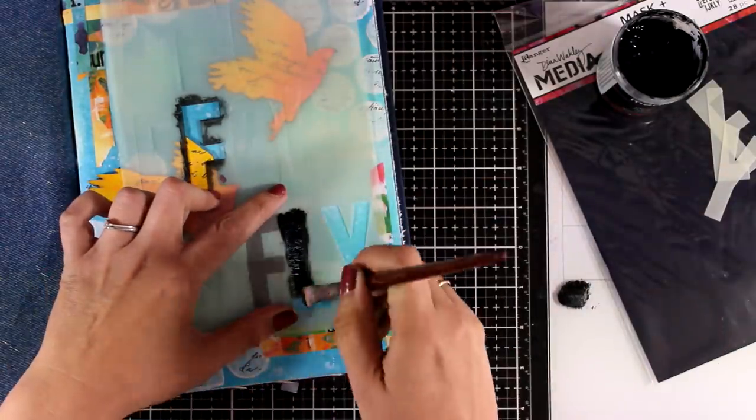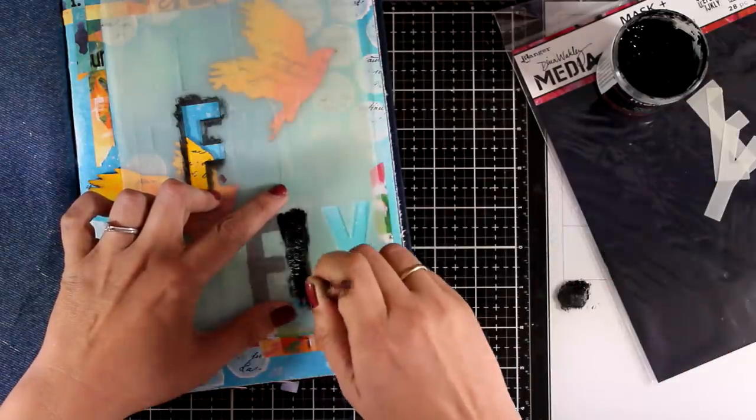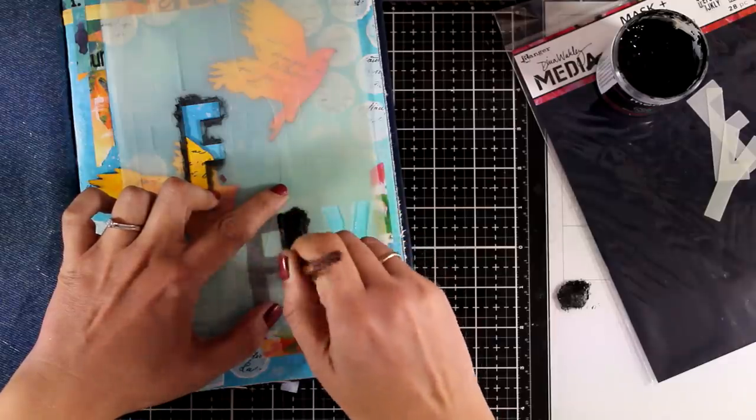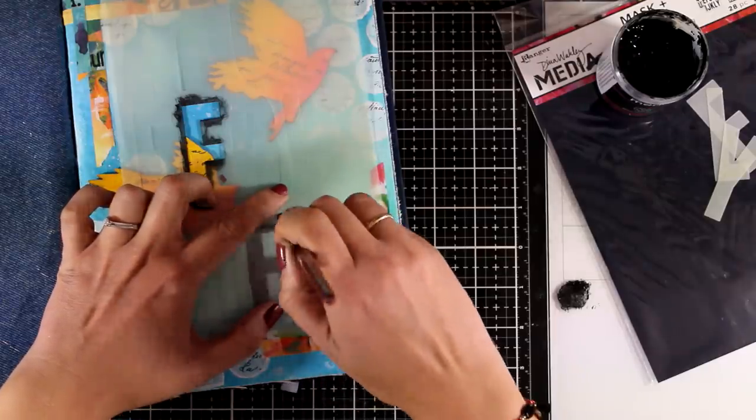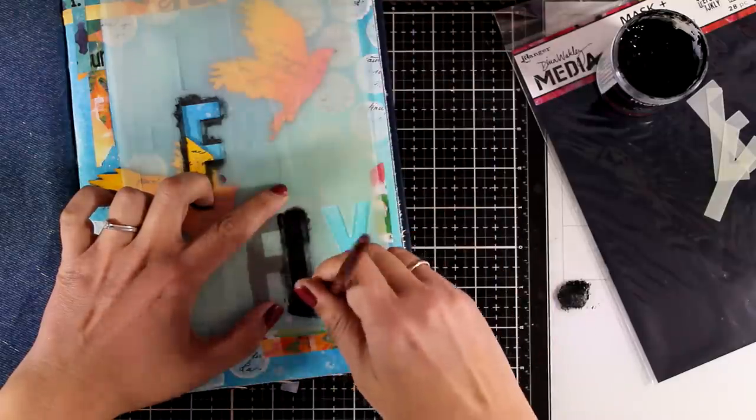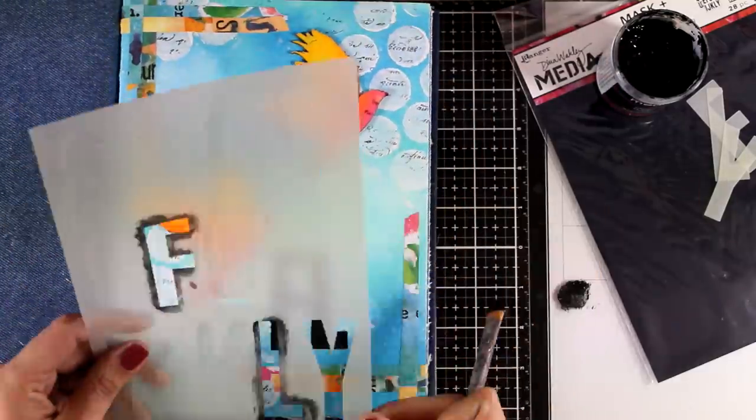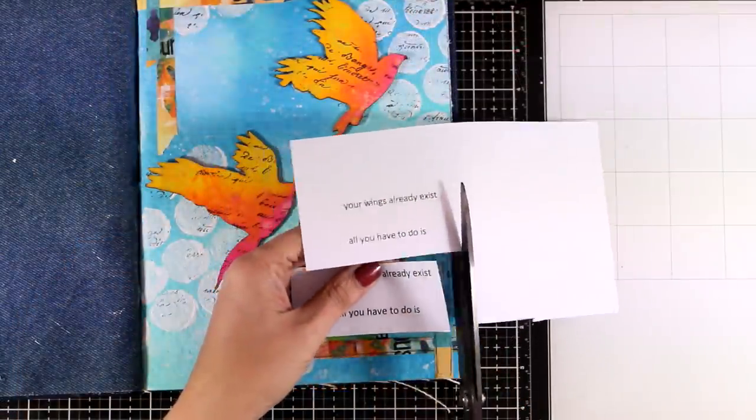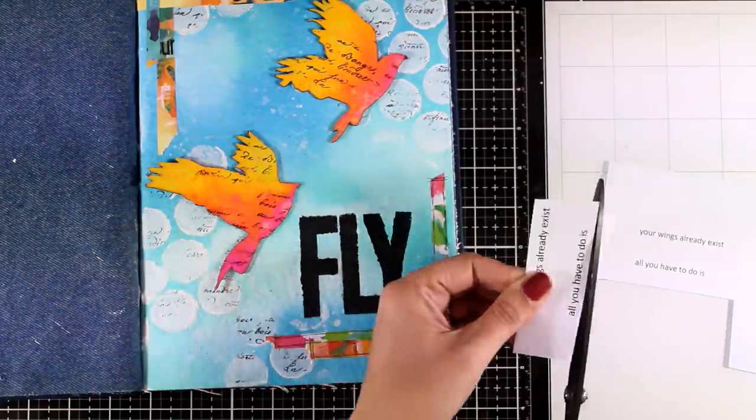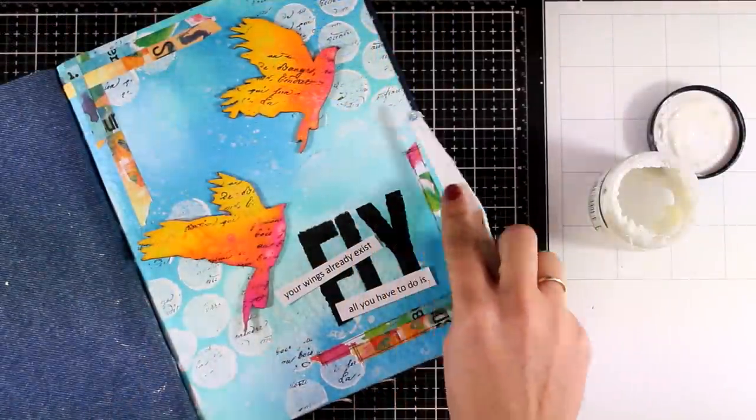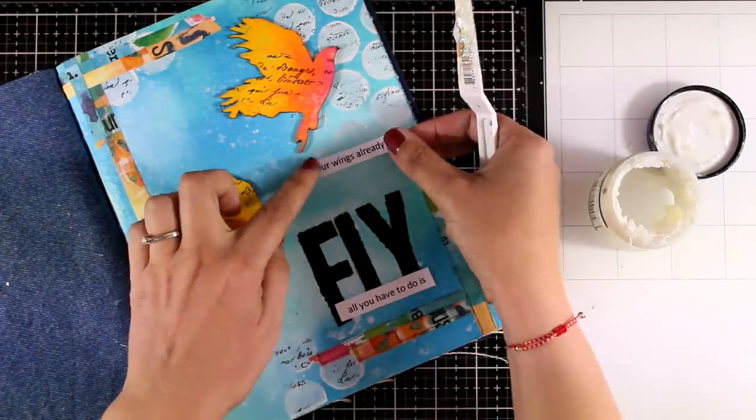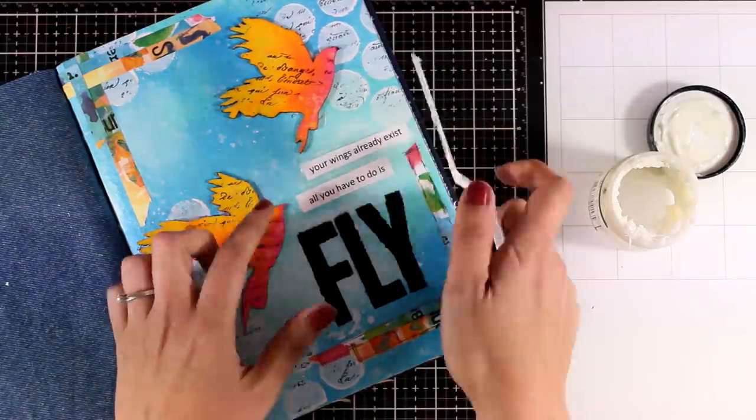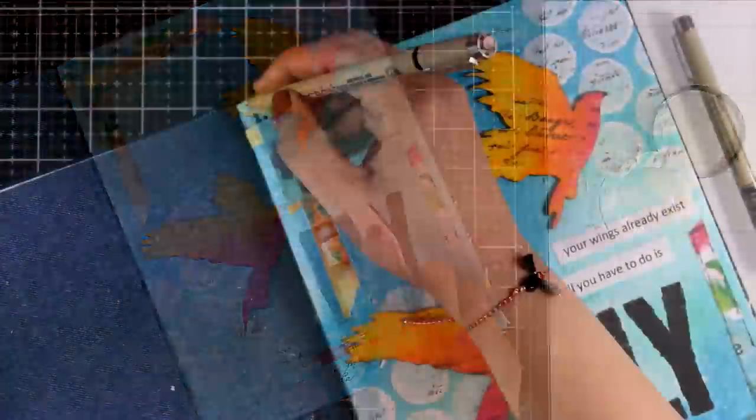I'm using black gesso here. But, of course, you can use black acrylic paint. You can use a spray if you like, or even a black marker. Now, as you can see, when I remove the stencil, nothing is perfect. And I am good with that since this is an art journal. And nothing else is looking perfect on this page. So, I'm going to do the Y. And then for the rest of the sentiment, I went to my printer and just print it out in a nice big font so that I can cut it into thin strips and stick it down.